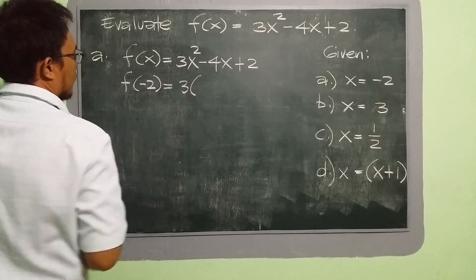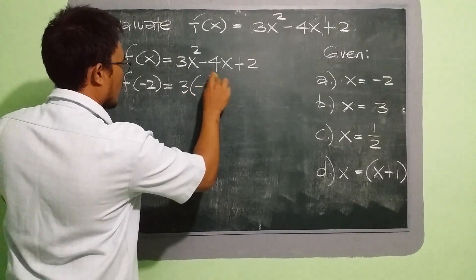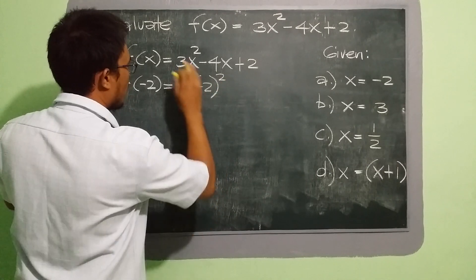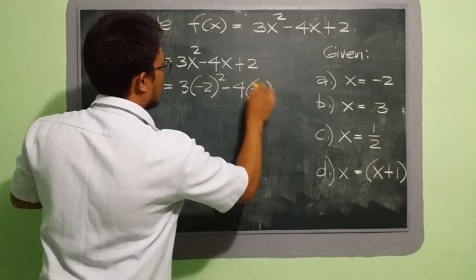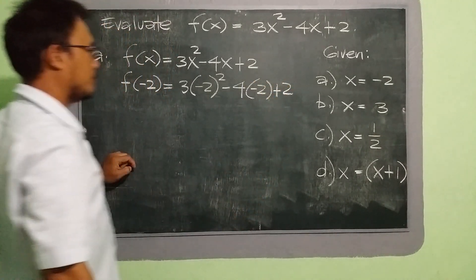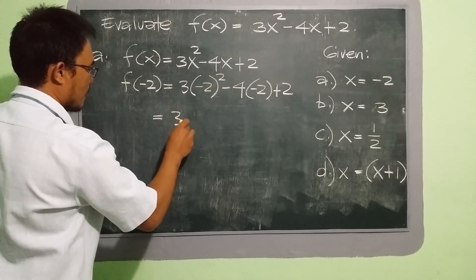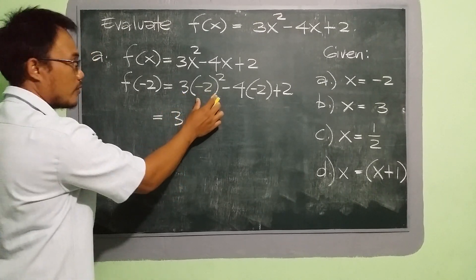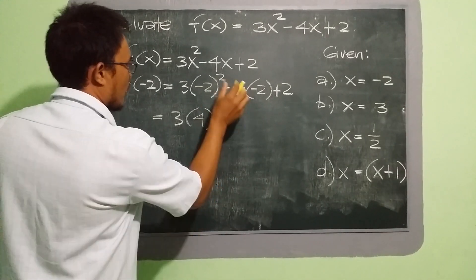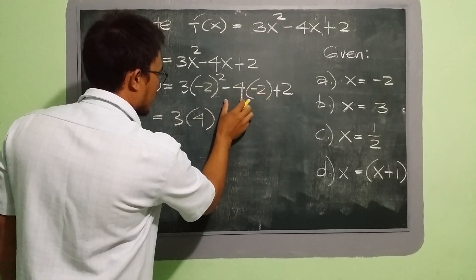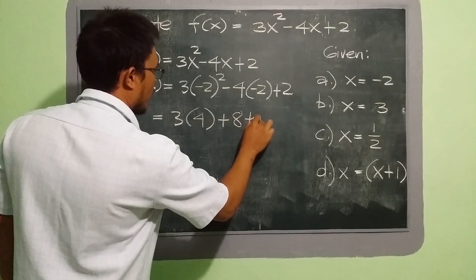So we substitute the value of x, which is negative 2, then don't forget the exponent which is 2. Then minus 4 times negative 2, and then we have plus 2. We need to simplify: negative 2 times negative 2 is positive 4. Then negative 4 times negative 2 — since both are negative, the result will be positive 8 — then plus 2.